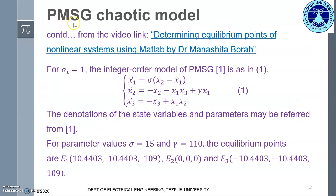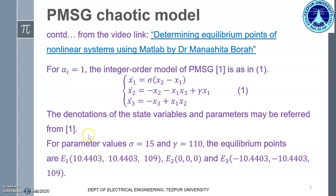Here in this slide, we begin with the PMSG or the Permanent Magnet Synchronous Generator Chaotic Model. This present video is a continuation from my previous video titled 'Determining Equilibrium Points of Nonlinear Systems Using MATLAB', where I had already explained about the Chaotic Model. On replacing all alpha i's by 1, we got this particular integer order model of PMSG taken from reference 1 as given in equation number 1. The denotations of the state variables x1, x2, and x3, and the parameters sigma and gamma may be referred from reference 1.